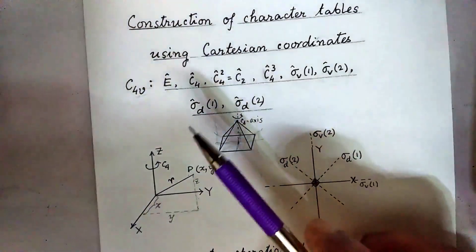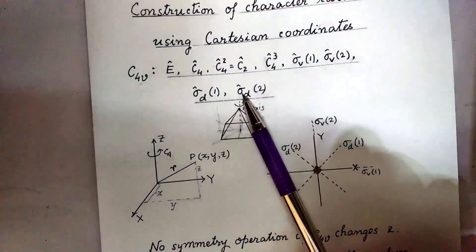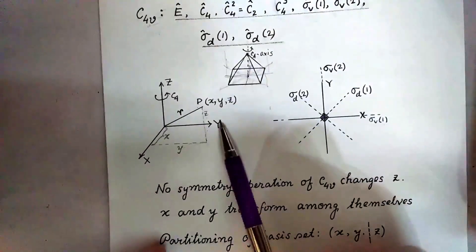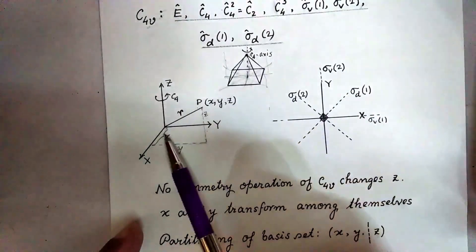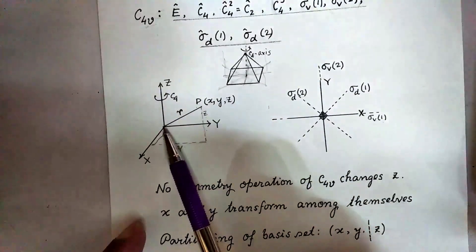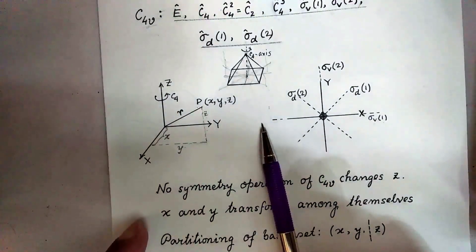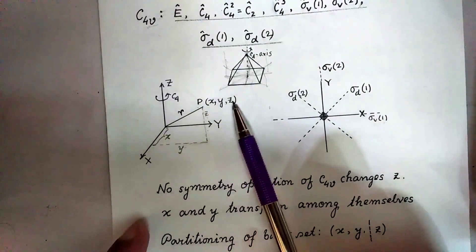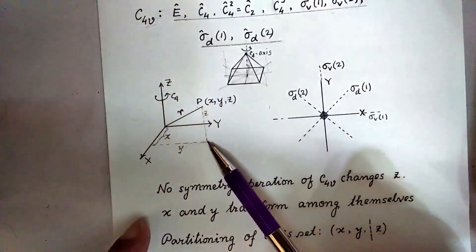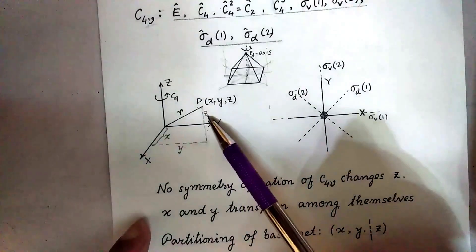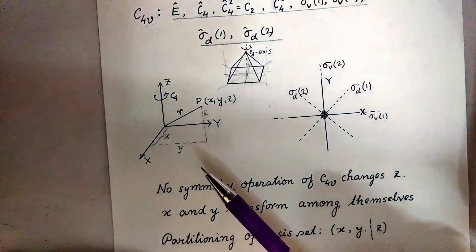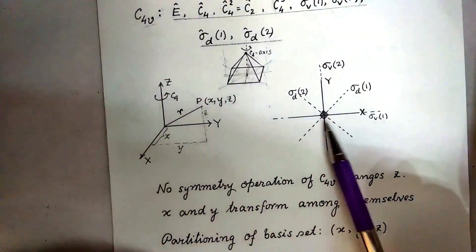I will represent these operators by matrices using Cartesian coordinates of a general point as basis. This is a right-handed coordinate system with X, Y, and Z axes. The Z axis is perpendicular to the plane of the paper and X and Y axes are on the plane of the paper. This is an arbitrary point P with coordinates X, Y, Z at a distance R from the origin. If you drop a perpendicular from P to the XY plane, the height from the XY plane is Z.